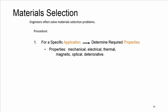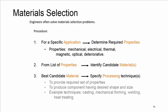Engineers often solve material selection problems. How to do it? First, we need to pick an application and determine the required properties. Second, based on the list of properties, we identify the candidate materials. And step three, for the material, we need to identify how to make it — we have to clearly find the process: for example, whether it's cast, mechanically formed, or welded, and so on.